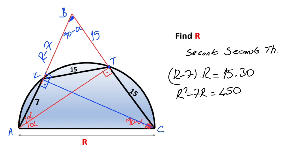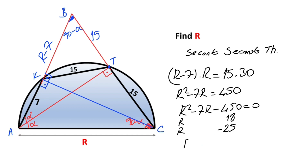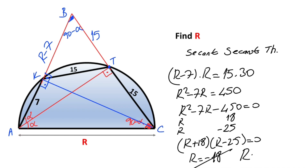So r squared minus 7r minus 450 equals zero. Factoring: (r plus 18)(r minus 25) equals zero, giving r equals minus 18 or r equals 25. Since length cannot be negative, r equals 25.